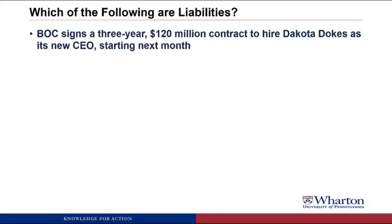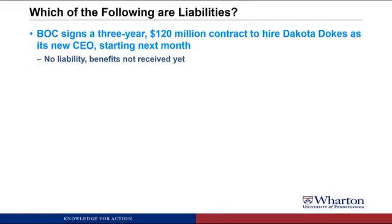BOC signs a three-year, $120 million contract to hire Dakota Doakes as its new CEO starting next month. This is not a liability because there's no obligation based on benefits received currently or in the past. Until Dakota actually works for us without getting paid, there cannot be a liability — and even then, the liability would only be for the time worked without pay. We wouldn't book a liability for the entire three-year contract because there's too much uncertainty: Dakota could quit, we could fire Dakota, or lawyers could find a way out of the contract.